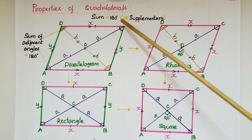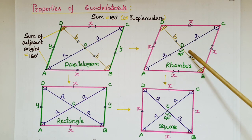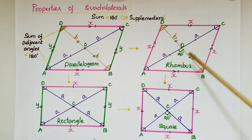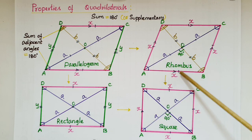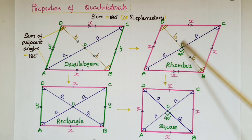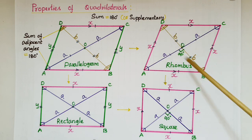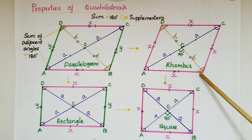Next is rhombus. Rhombus is also a parallelogram, so opposite sides are parallel. But the difference between a parallelogram and a rhombus is that in a rhombus all sides are equal and diagonals bisect at 90 degrees. The remaining properties are the same — diagonals bisect each other and opposite angles of a rhombus are also equal.